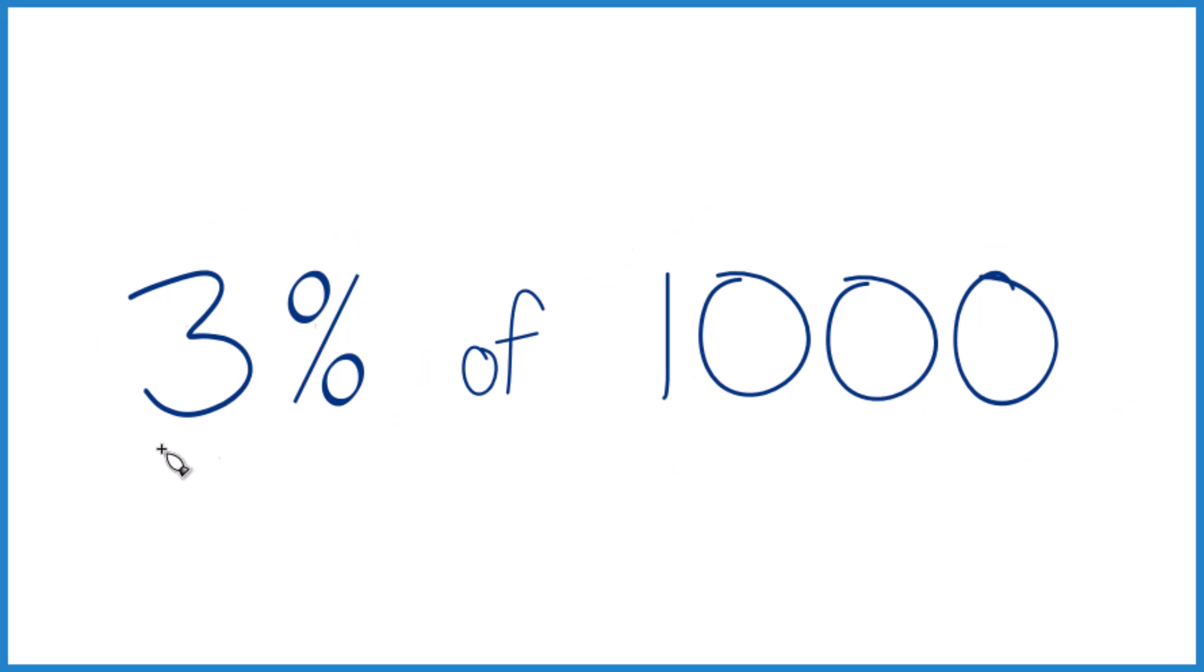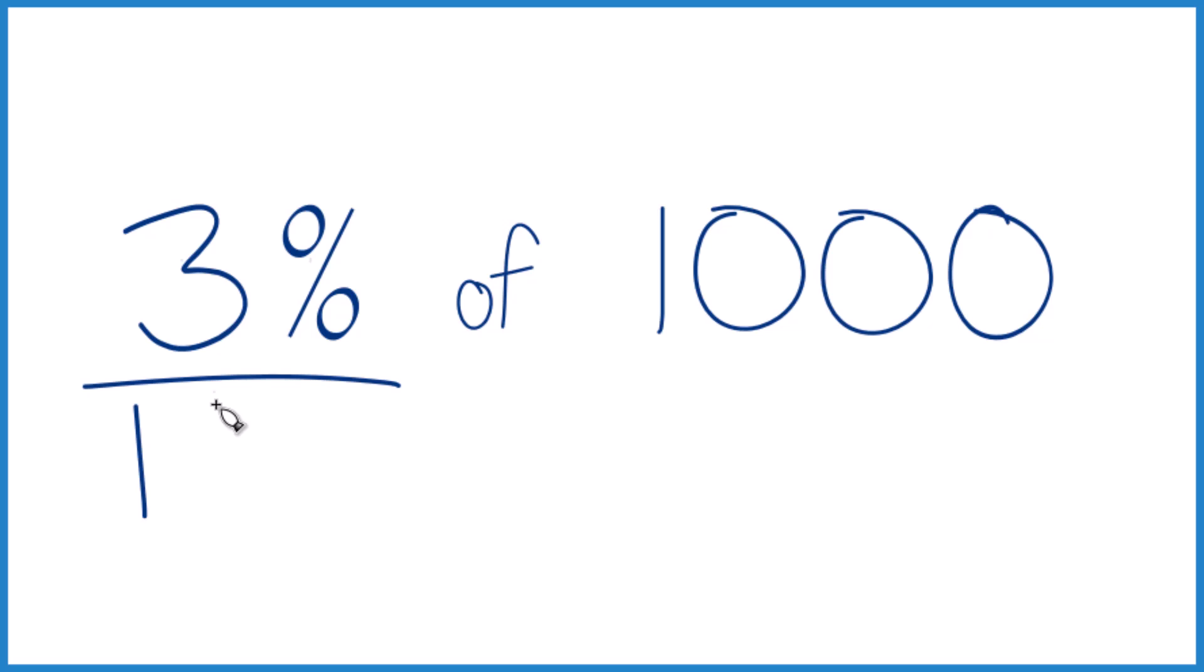So 3%, that's three per 100, three out of 100. So you could say, if you had 100 here, it would just be three. We have 1,000, so let's put another decimal place there, and it's 30.